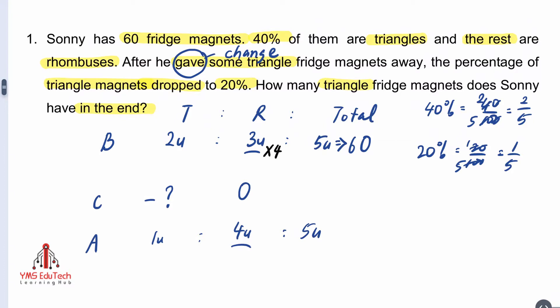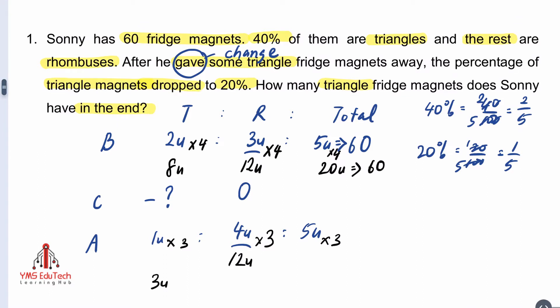To get 12, we have to multiply 3 units by 4, and multiply the 4 units by 3. That makes 12 units for both. We need to do the same to the remaining number of units. For the first row, we multiply by 4 throughout — so there were 8 units of triangle magnets and 20 units in total at first. Multiplying by 3 for the next row gives 3 units of triangle magnets, 12 units of rhombus magnets, and 15 units in total in the end.